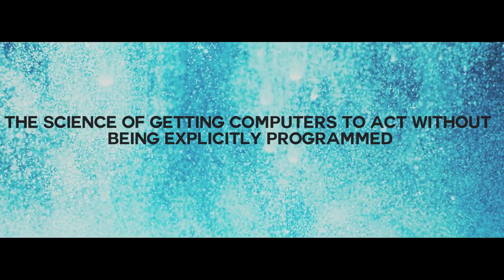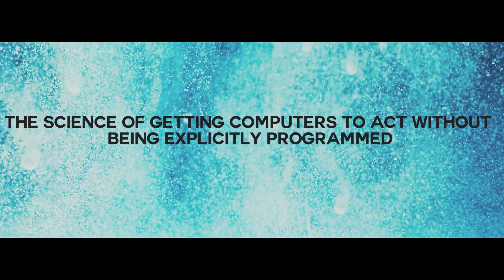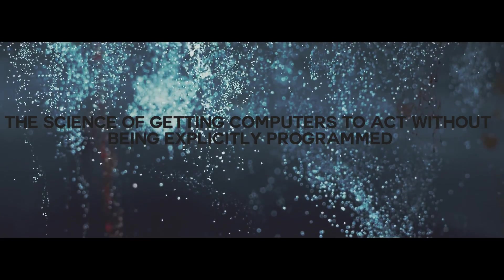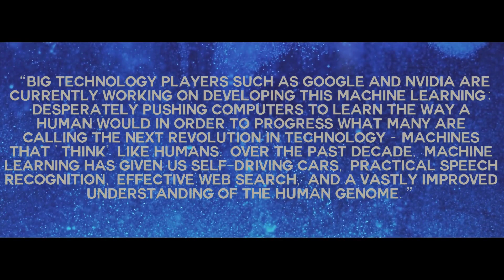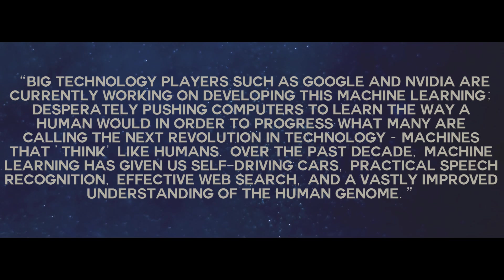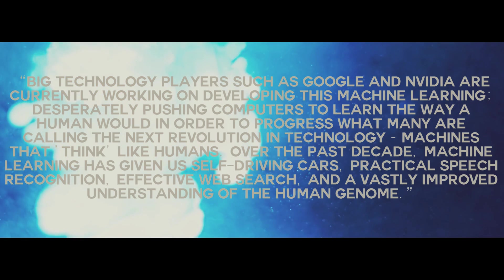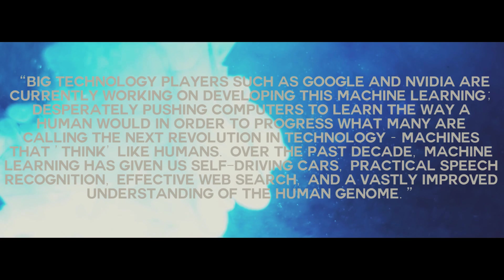Now let's speak a bit more about machine learning. According to Wired, machine learning is defined as the science of getting computers to act without being explicitly programmed — a definition they sourced from Stanford University. Big technology players such as Google and Nvidia are currently working on developing machine learning, desperately pushing computers to learn the way a human would. Over the past decade, machine learning has given us self-driving cars, practical speech recognition, effective web search, and a vastly improved understanding of the human genome.